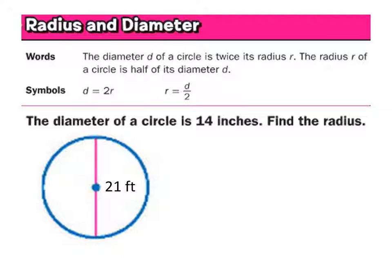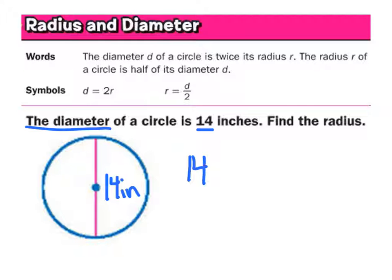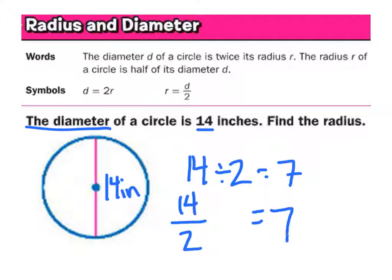The diameter of a circle is 14 inches — find the radius. We have 14 inches as the diameter, so to find the radius we divide 14 by two. In fraction form or as a division, both give us seven. However, if you put just seven on the test, you'll miss points — this problem gives you a label in inches, so your answer should be in inches: seven inches.